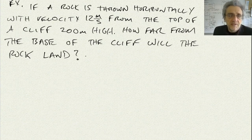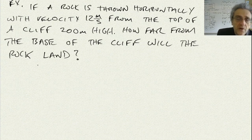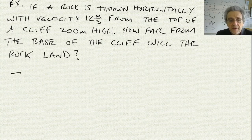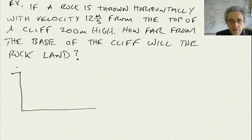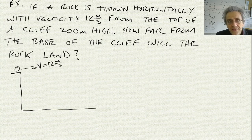In order to solve this, the first thing we should do is draw a picture. Here's our rock. We have our initial velocity of 12 meters per second, and the path through the air is going to look something like that.